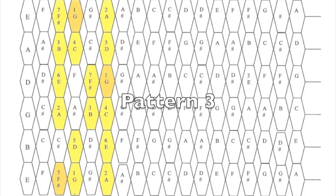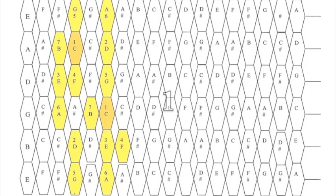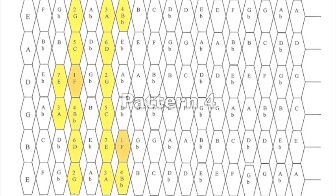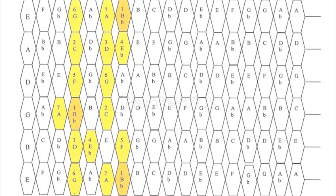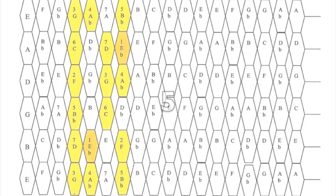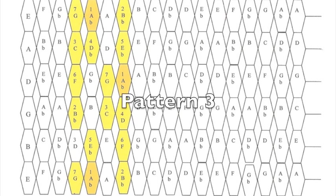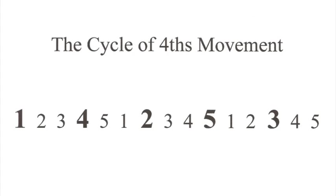Pattern three in the cycle of fourths goes three to one. Pattern one goes one to four. Pattern four goes four to two. Pattern two goes two to five. Pattern five goes five to three. Then pattern three goes three to one, and pattern one goes one to four.